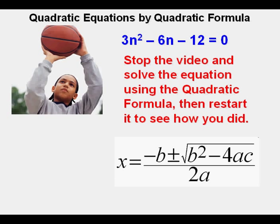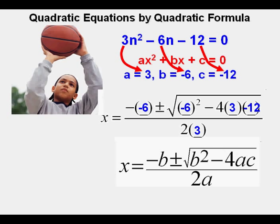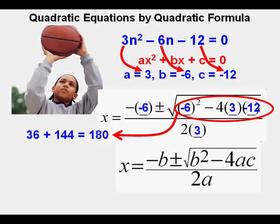The first thing Joe does is notice that the equation is already in standard form. He identifies a, b, and c from the standard form of this quadratic equation. The next thing he does is put the numbers into the parentheses for each of the numbers. He checks the value of the discriminant. It simplifies to 36 plus 144 or 180, so this equation has real solutions.